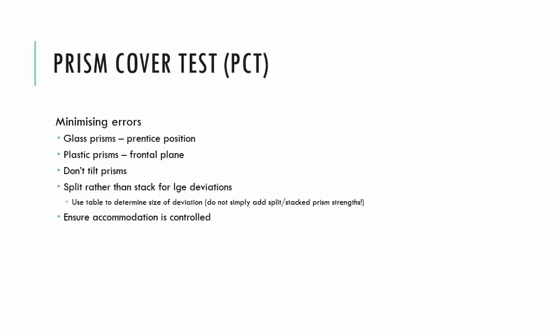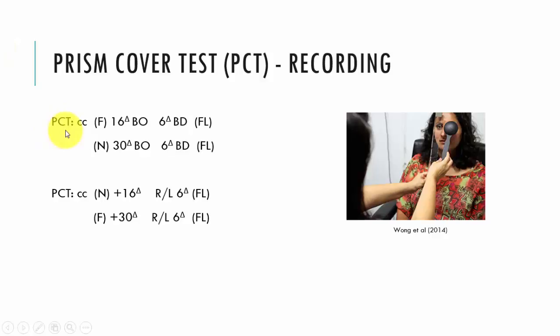In terms of recording the prism cover test, we would indicate PCT for a prism cover test, or in some instances, you may see PACT, indicate whether you used glasses or not, the distance, far, near, and then the size of the prism that neutralized the deviation. So, we've got 16 prism diopters base out, 6 diopters base down, and for near, 30 diopters base out, 6 diopters base down. And we also indicate which eye was the fixing eye. So, this is the eye that was or did not have the prism in front of it, which tells us that the prism was in front of the right eye in this instance.